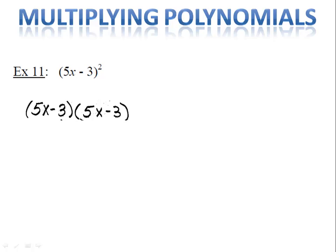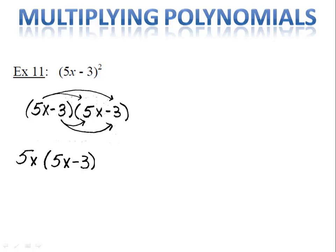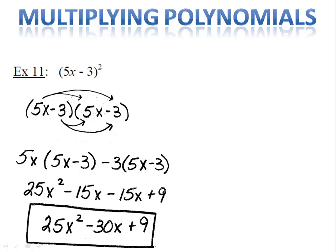In example 2, we have 5x minus 3 squared. Now be careful — there are a lot of errors that can be made here. Remember, when we square something, we multiply it by itself: 5x minus 3 times 5x minus 3. I recommend actually writing it out so that you don't make a mistake. Once again, you're using the distributive property twice, or FOIL. We distribute 5x into 5x minus 3, giving us 25x squared minus 15x. Then we distribute the negative 3 into 5x minus 3, giving us minus 15x plus 9. Combining like terms, I have 25x squared minus 30x plus 9.